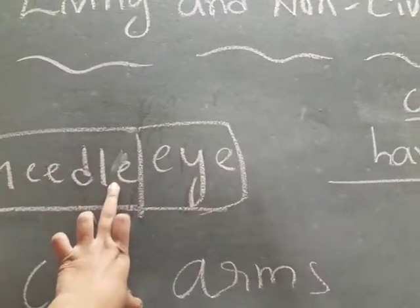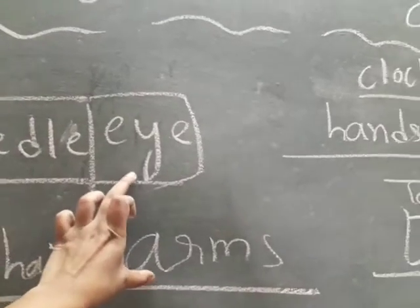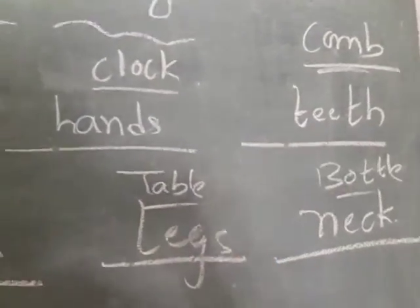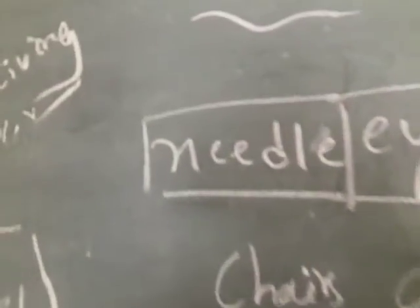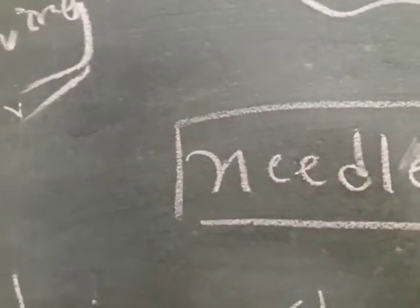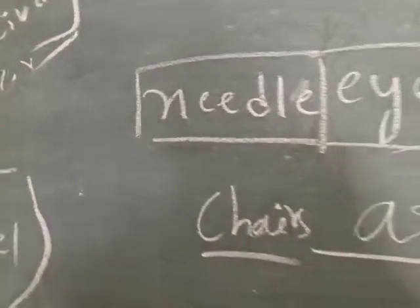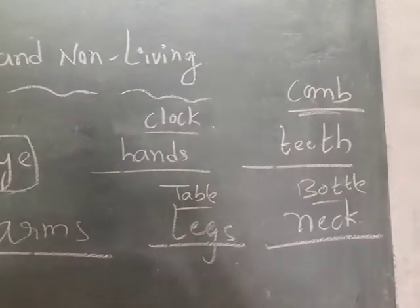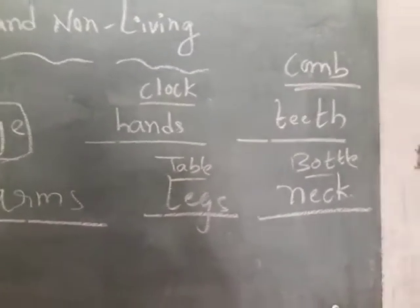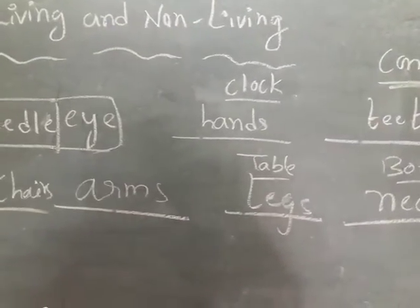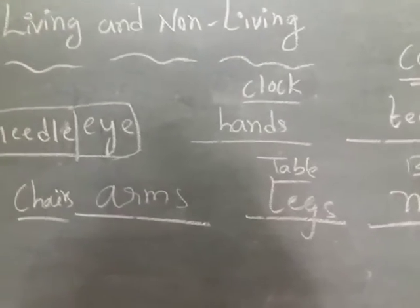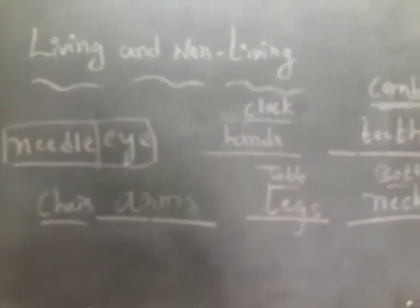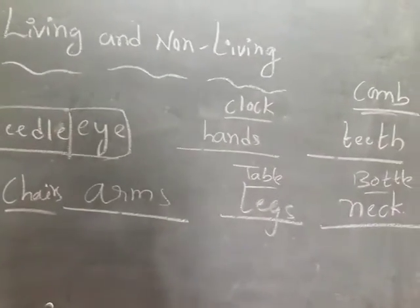These are non-living things, but their body part names are from living things: eye, arms, hands, legs, teeth, and neck. Okay, children, can you understand? Yes. Thank you.